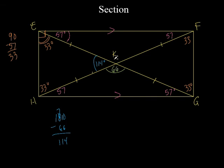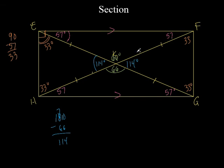If EKH is 66, then angle EKF is also 66 — vertical angles. Then the supplementary angle is 180 minus 66, or you could just use vertical angles again: that angle is 114. We call them vertical angles, even though they aren't literally vertical. Some books call them opposite angles.